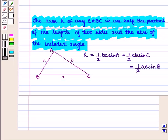If we have this triangle ABC with sides A, B and C opposite to the angles A, B and C respectively, then area K is given by 1/2 × BC × sin A